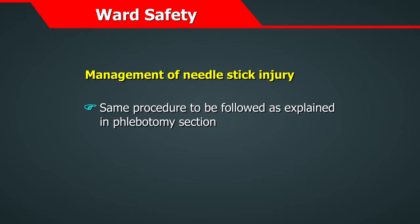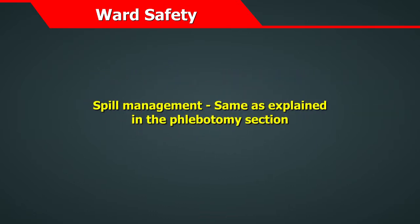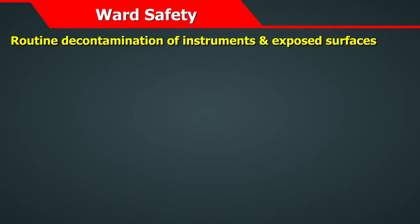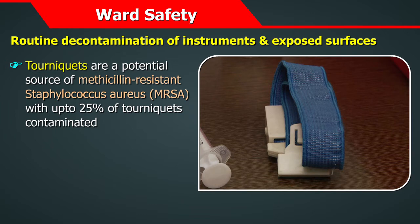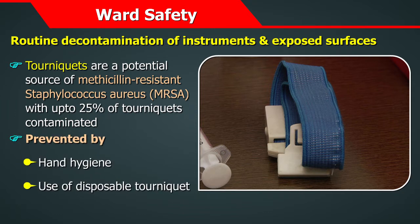Management of needle stick injury and spill management should be followed as explained in the phlebotomy section. Regarding routine decontamination of instruments and exposed surfaces: tourniquets are a potential source of methicillin-resistant Staphylococcus aureus (MRSA), with up to 25% of tourniquets contaminated through lack of hand hygiene on the part of the phlebotomist. This can be prevented by following hand hygiene diligently.